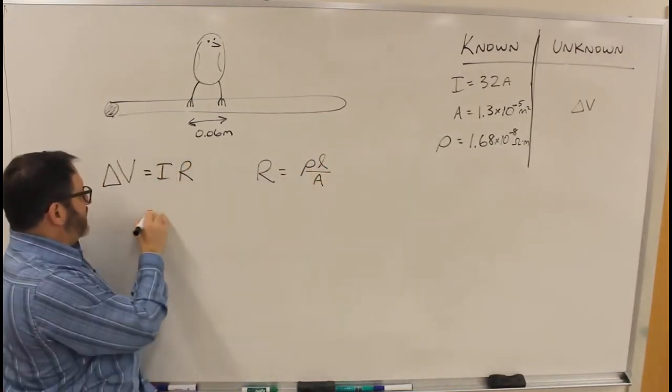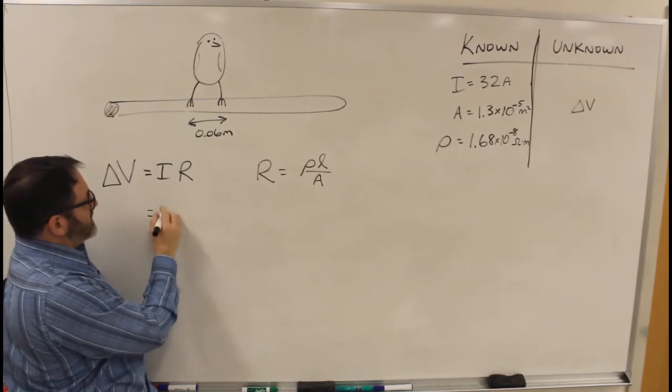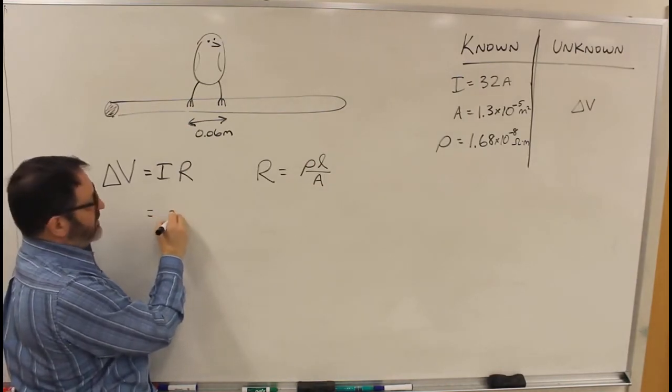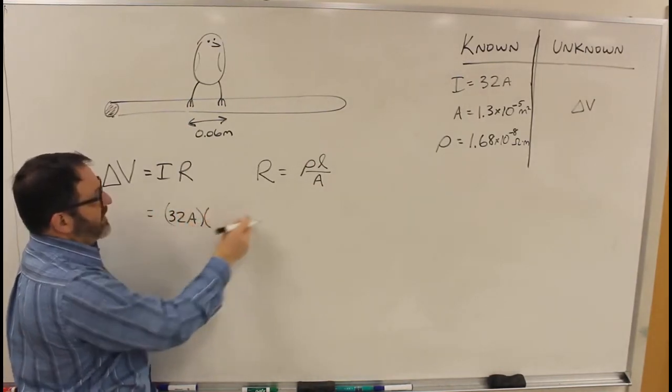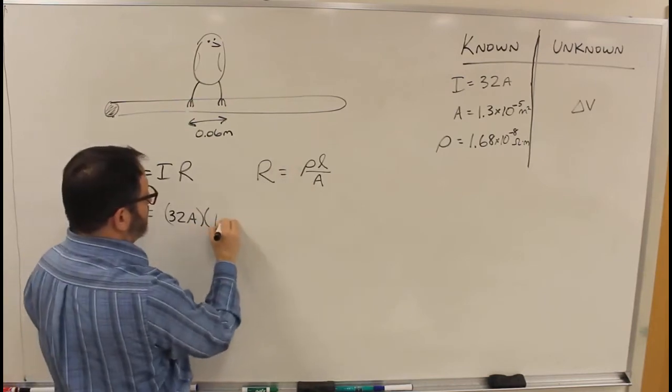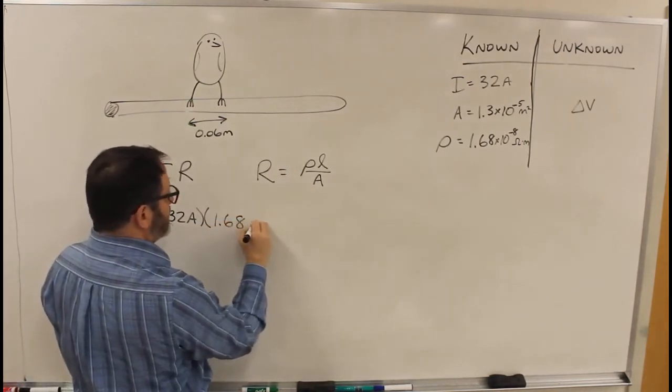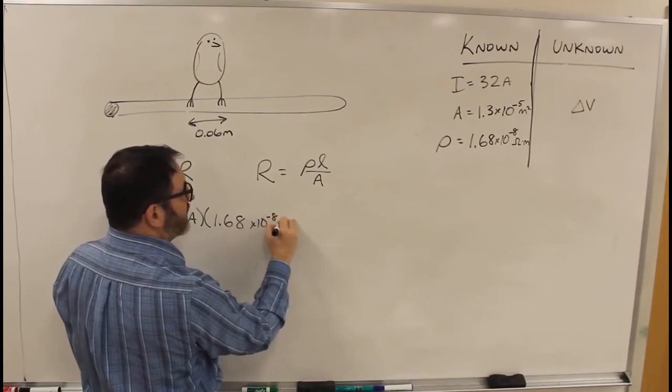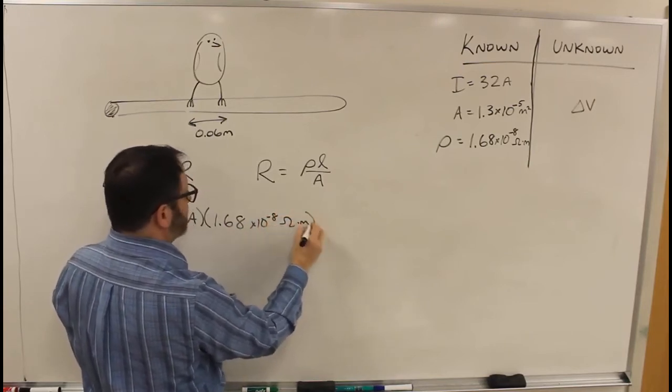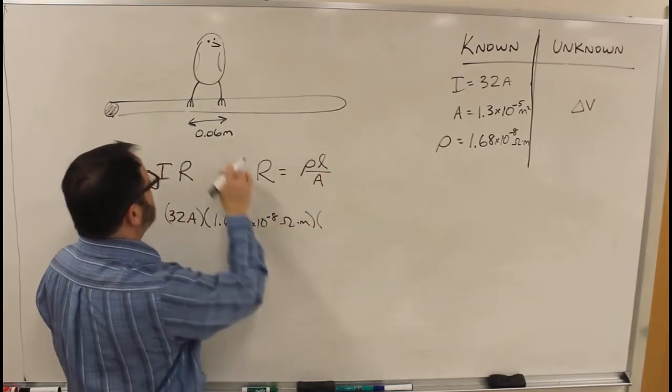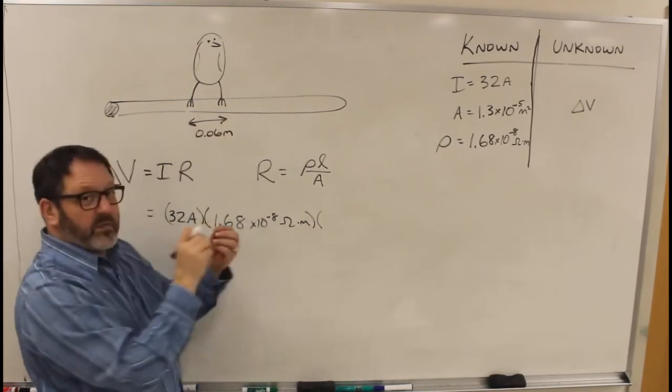So here change in voltage is 32 amps times rho 1.68 times 10 to the minus 8 ohm meters times L. L in this case is the distance between the birds' feet.